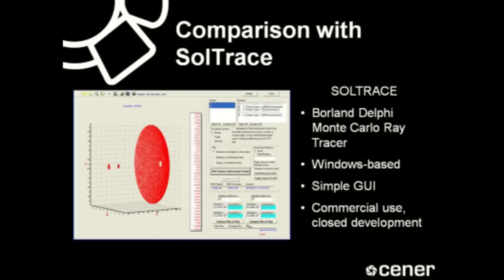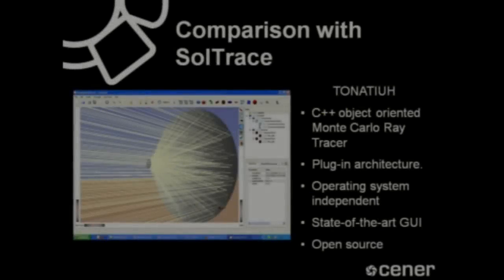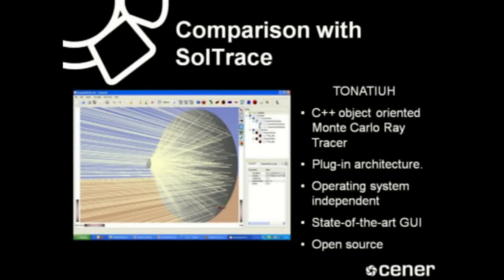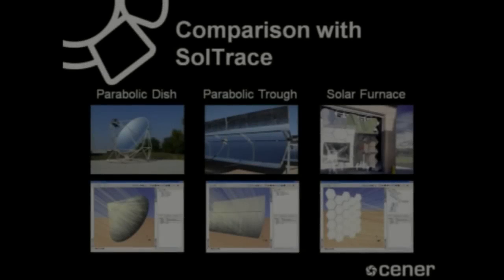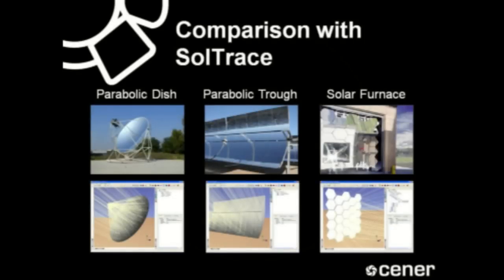Although SolTrace is not open source, it is available free of charge at NREL's website and can be used for commercial purposes without many restrictions. In contrast, Tonatiuh is coded in C++, targets Windows, Linux and Macintosh OS X, has a very sophisticated graphical user interface, is open source, and has a plugin architecture that makes it easy to extend and customize. The comparison consists of simulating three different concentrating systems: a parabolic dish, a parabolic trough, and NREL's high concentration solar furnace.